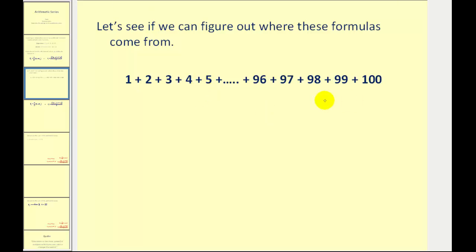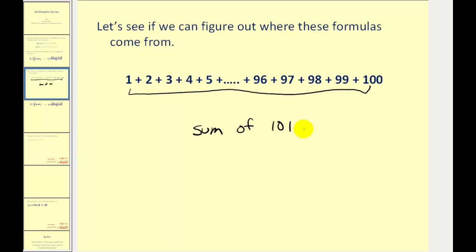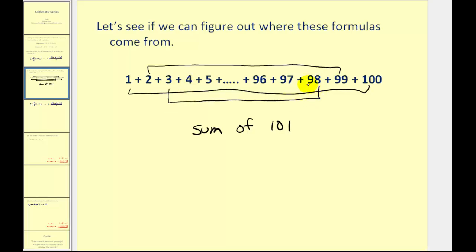The next thing we might do is start pairing up these numbers. If we start pairing these up we're going to notice a pattern. What I mean by that is if we take the first term and add it to the last term that has a sum of 101. And if we take the second term and add it to the second to the last term we'll also have a sum of 101. And this pattern continues so we could continue pairing these up to have sums of 101.